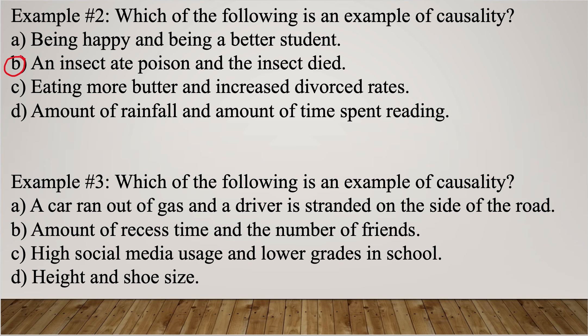Which of the following is an example of causality? The options are: a car ran out of gas and a driver is stranded on the side of the road; the amount of recess time and the number of friends; high school social media use and lower grades in school; height and shoe size. I would go with option A — a car ran out of gas. If your car runs out of gas, 100% you're going to be stranded on the side of the road. The cause is that your car runs out of gas; the effect is that you're stranded on the side of the road. Hopefully those examples give you a better understanding of correlation versus causality.